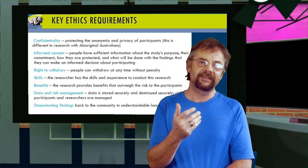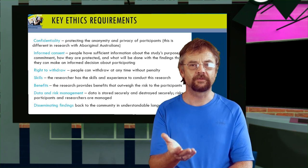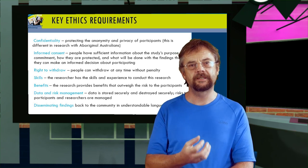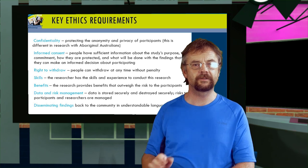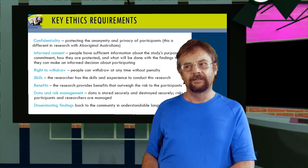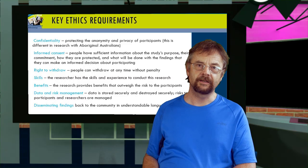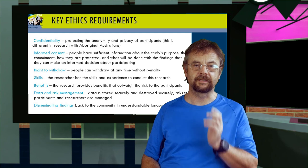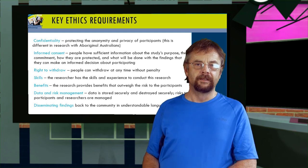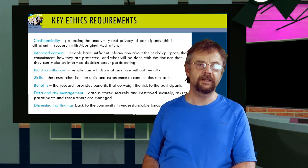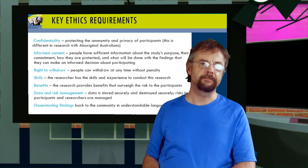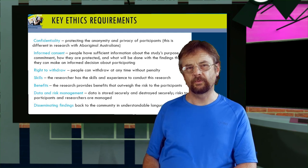In research, confidentiality doesn't typically work like that, because you're going to share what participants disclose to you — you're going to write a research report and hopefully publish your findings. So when you offer confidentiality, all you're really offering is anonymity. In research, confidentiality typically means you will anonymise the participant but still publicly disclose the data they share with you. In Australia there's another complication: confidentiality means something different for Indigenous people like Aboriginal people, and we'll talk about that in week six.